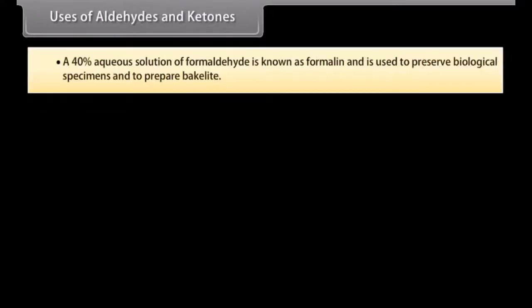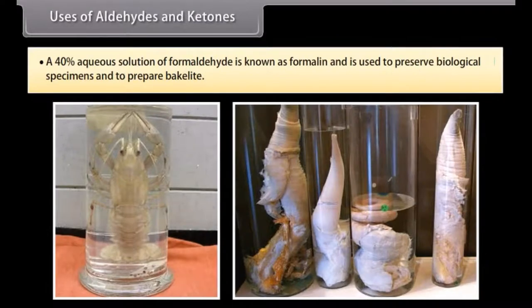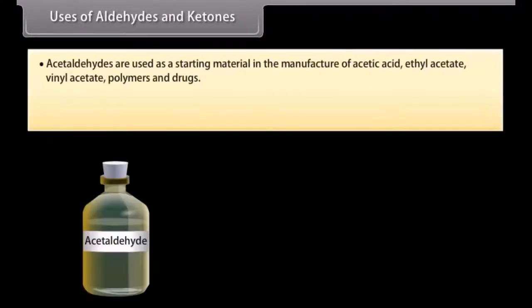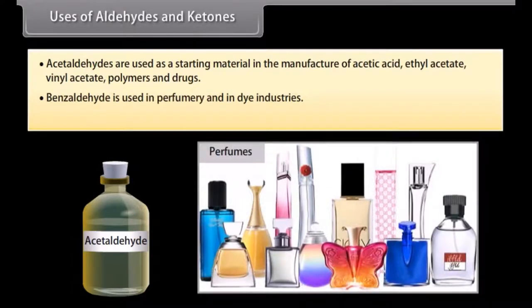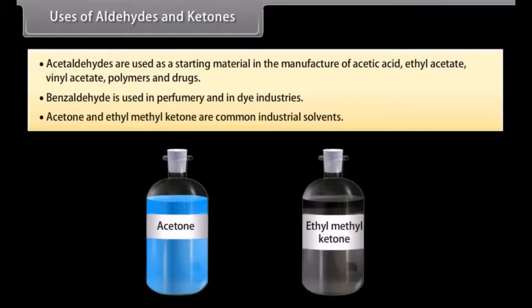Uses of aldehydes and ketones: A 40% aqueous solution of formaldehyde is known as formalin and is used to preserve biological specimens and to prepare bakelite. Acetaldehydes are used as a starting material in the manufacture of acetic acid, ethyl acetate, vinyl acetate, polymers and drugs. Benzaldehyde is used in perfumery and in dye industries. Acetone and ethyl methyl ketone are common industrial solvents.